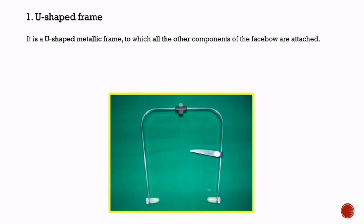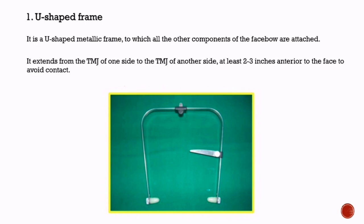First is the U-shaped frame. It is a U-shaped metallic frame to which all the other components of the face bow are attached. It extends from the TMJ of one side to the TMJ of another side, positioned at least two to three inches anterior to the face to avoid contact.